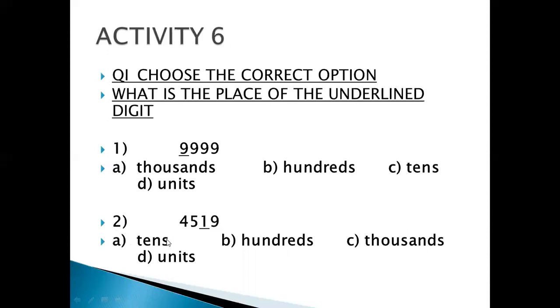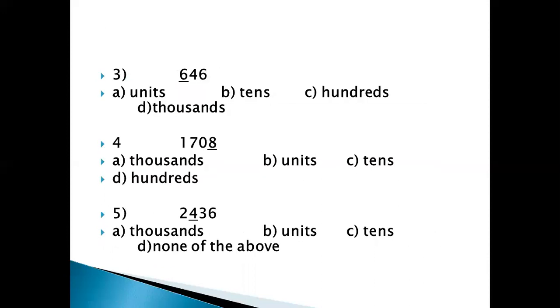So we've got option A as 10th, then we've got 100th, then we've got 1000th and then we've got units. So you underline the correct option or you can also circle the correct option.